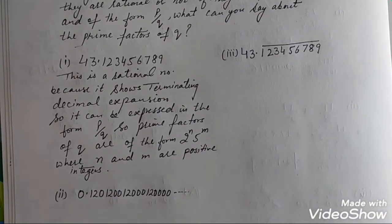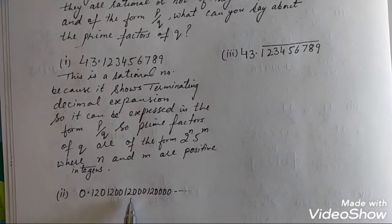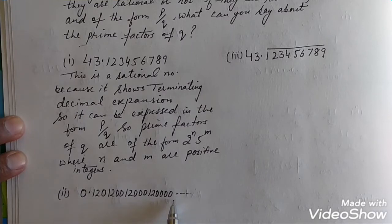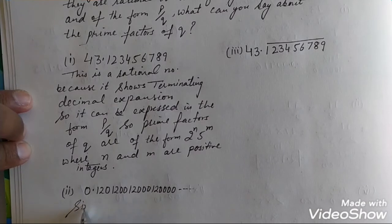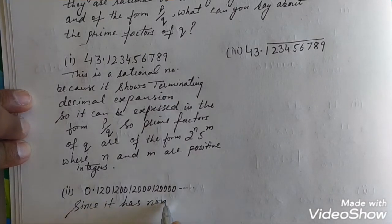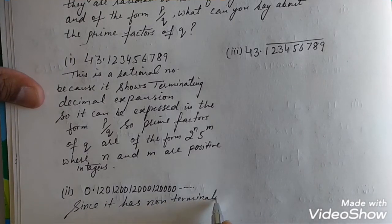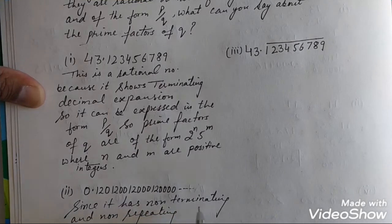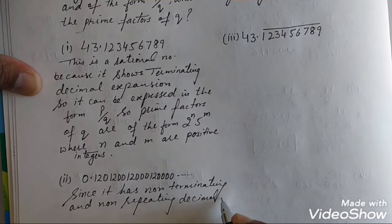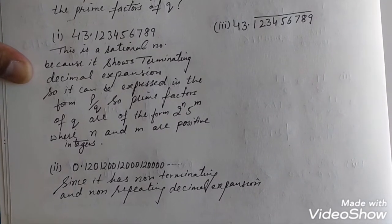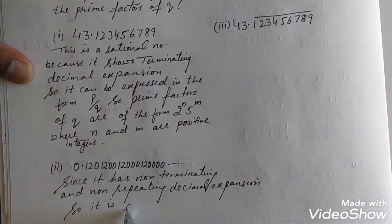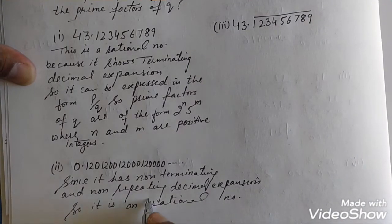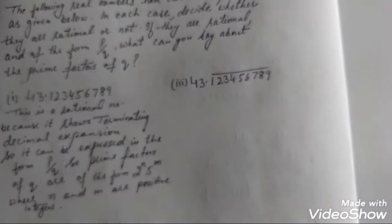The next number is 0.12012001200012000124... and so on. Since it has a non-terminating non-repeating decimal expansion, it is an irrational number.